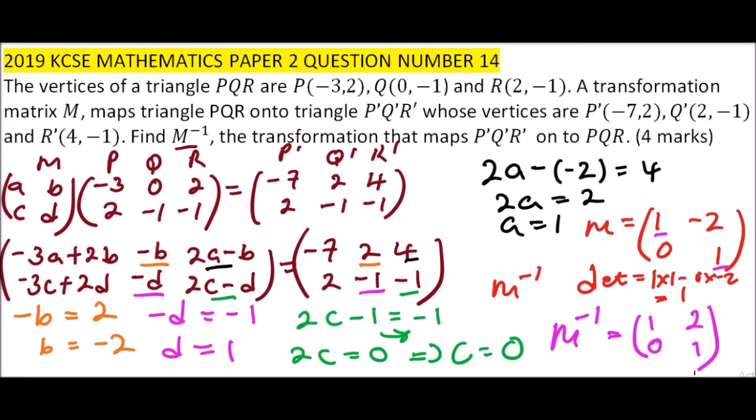And that is how you work out that question, and you get yourself 4 marks. What you are being tested here is whether you know how to find the matrix, given the object and the image, and whether you know how to find the inverse of a matrix. I hope you have understood, and that's how you go about that kind of question.